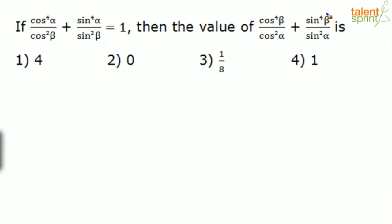Instead, let's try substituting values of α and β. I started with α = β = 45°, and I was lucky — it satisfies the given condition. Let's verify: substitute cos 45° = 1/√2 into cos⁴α/cos²β + sin⁴α/sin²β.